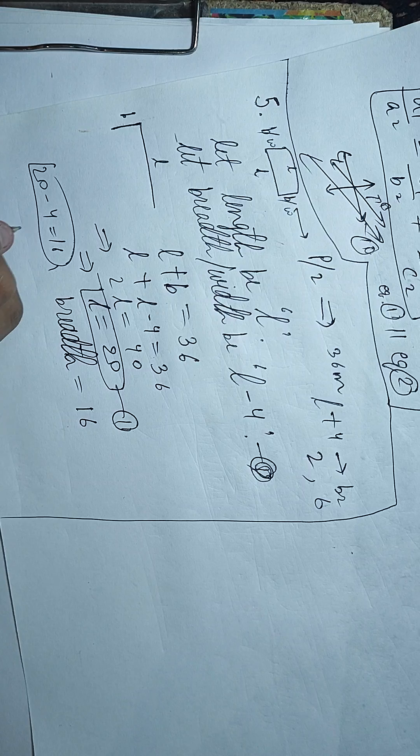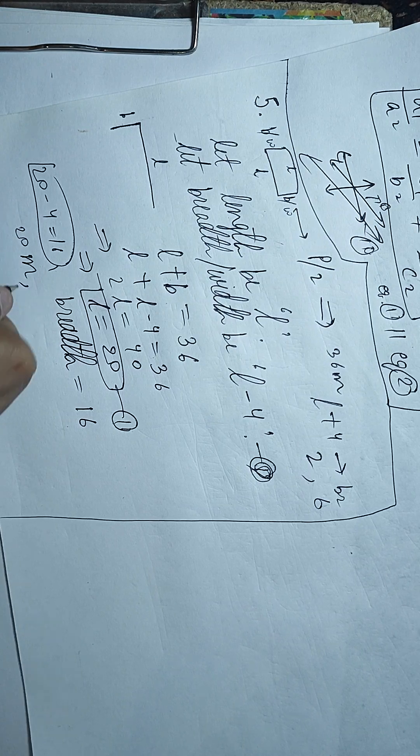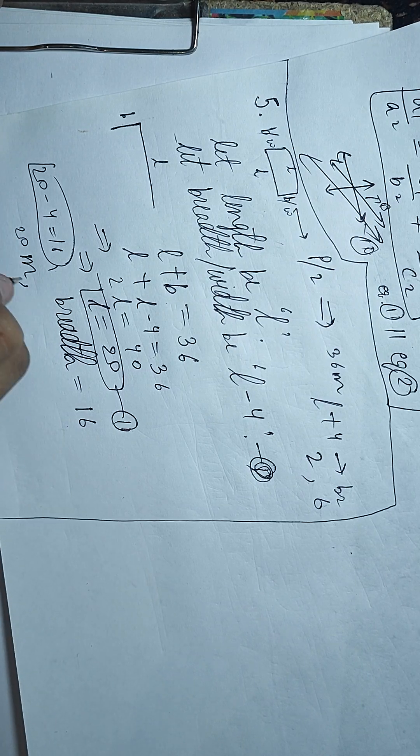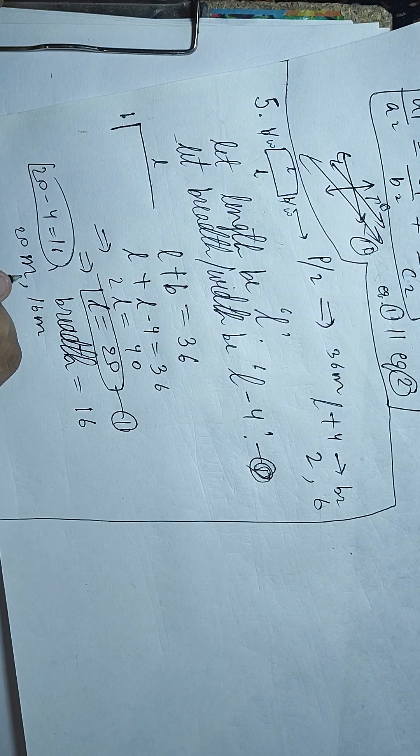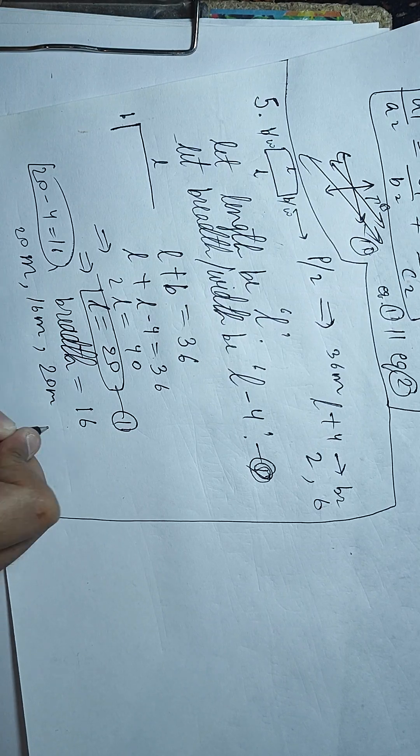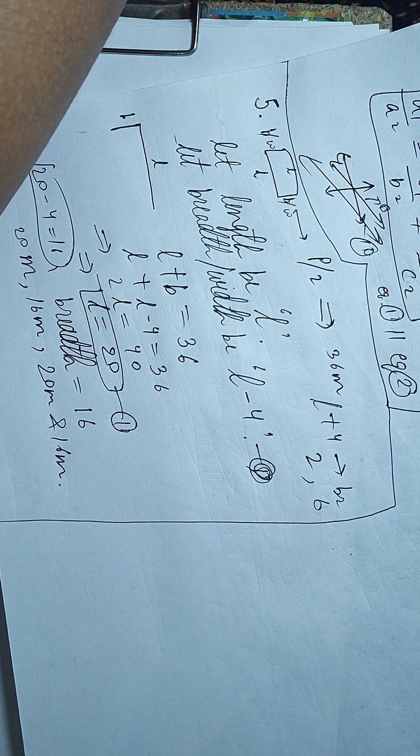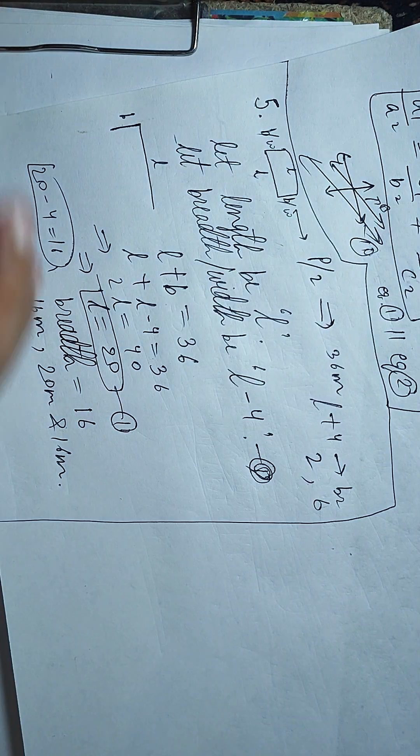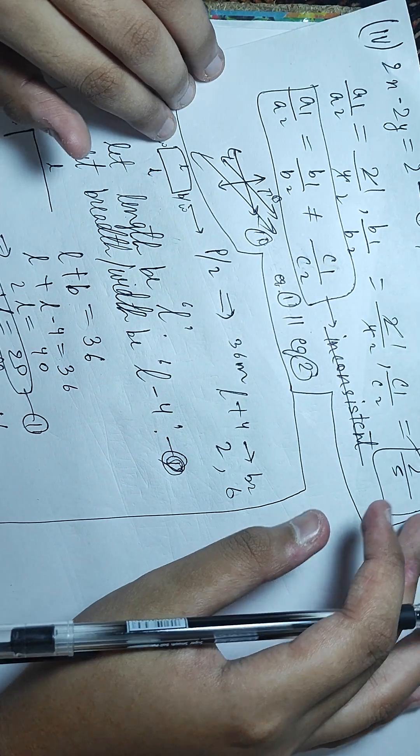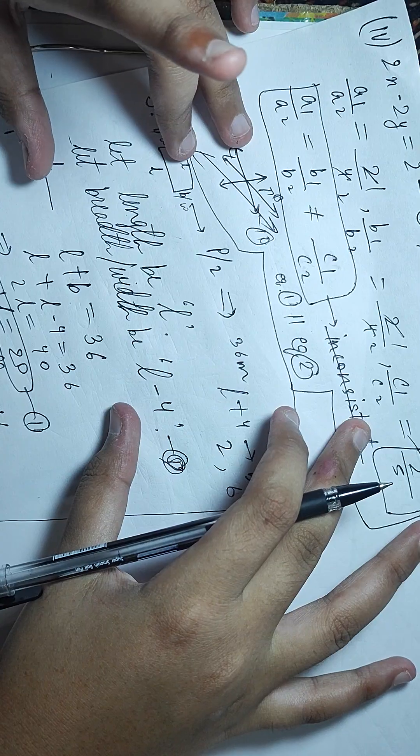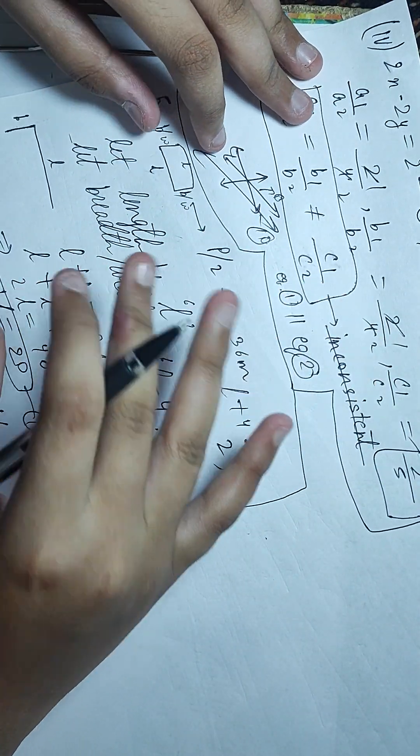If you add both, the dimensions will be 20 meters length and 16 meters breadth. This is question number 5 solution. The perimeter of the rectangle garden.